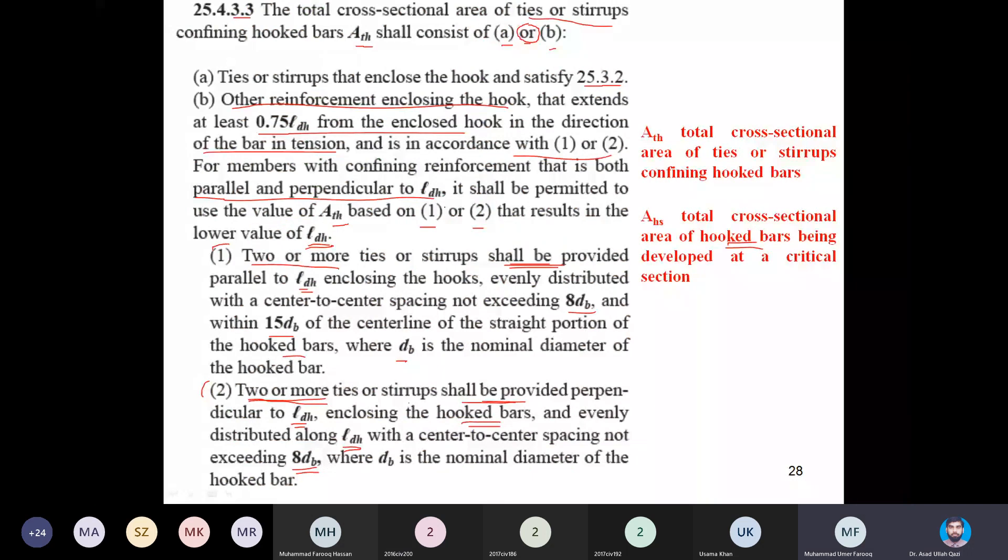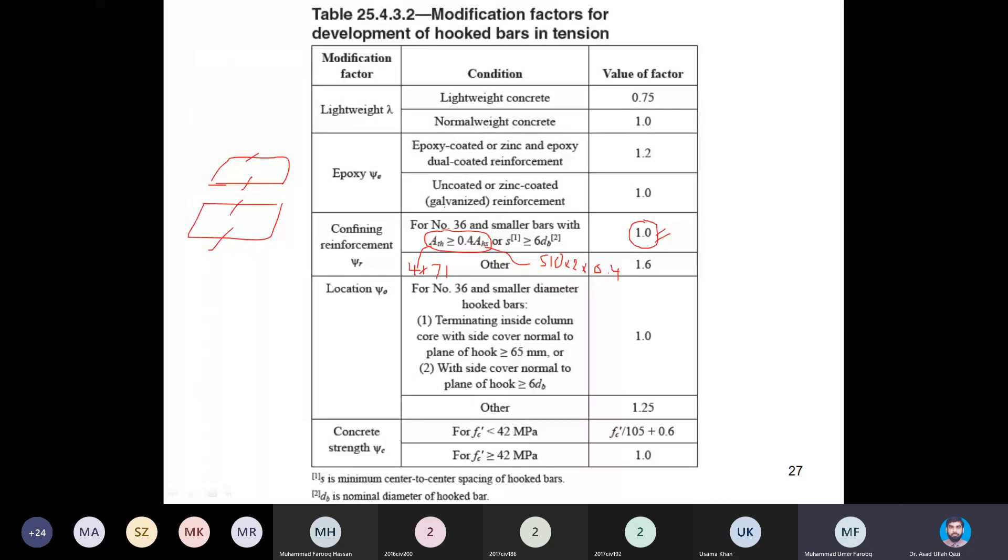What is the answer? The left hand side is 284 or 408. It means it is not exceeding. Left hand side is not greater than or at least equal. In this way we can't avail this factor 1. But there is OR in between. If the second is fulfilled - that the spacing between the hook bar is at least 6 dB - then still we have the offer of 1. But if both are not fulfilled, then we should go for 1.6.